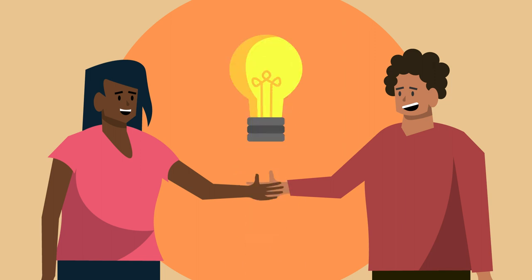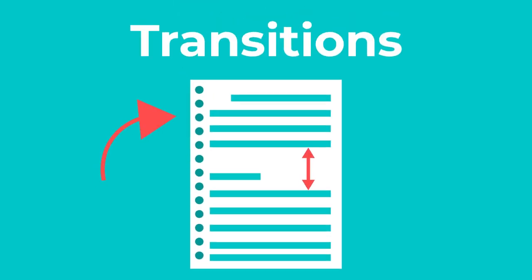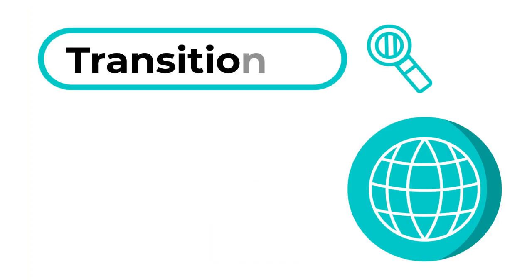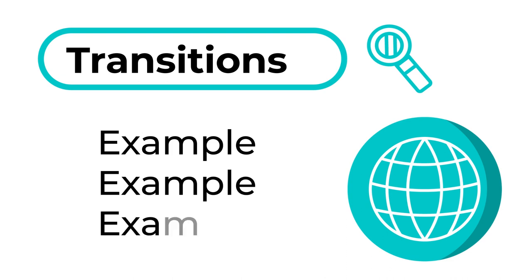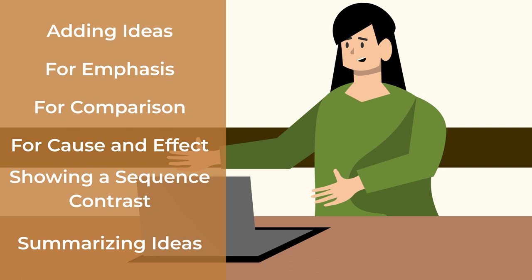Transitions help show relationships between ideas, create a logical flow, and create a sense of connectedness called coherence. Transitions can be used both within and between paragraphs to create a sense of flow. Many websites give long lists of transitions — search transitions in your browser for examples. Throughout this video, you'll find transitional words and phrases you will feel comfortable using in your own writing.